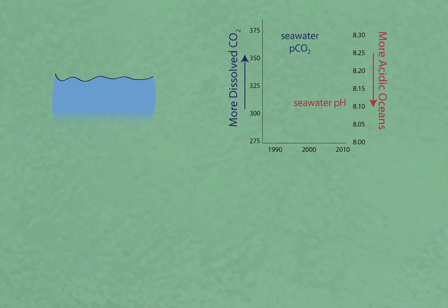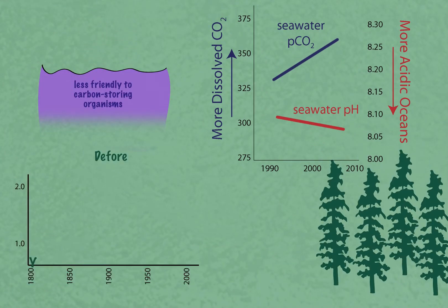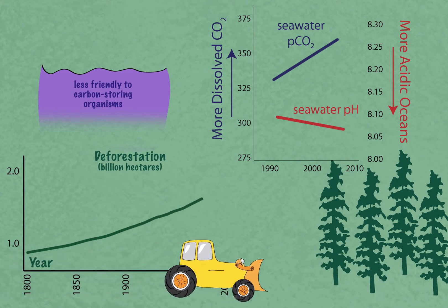And on top of that, the efficiency and availability of these sinks may change over time as they react to changing climate conditions and as we clear forests for agriculture or homes.